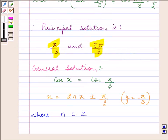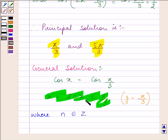Whereas the general solution comes out to be x equals 2nπ plus or minus π by 3, where n belongs to Z.